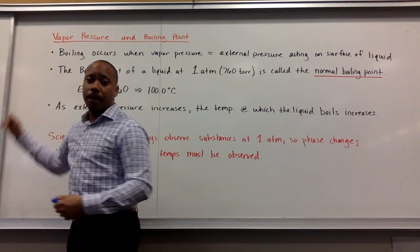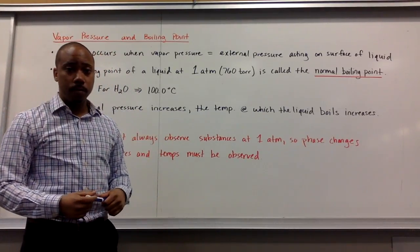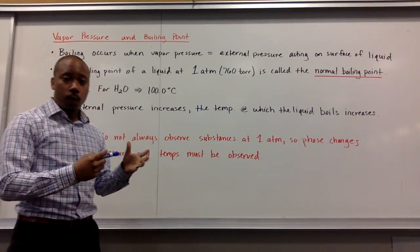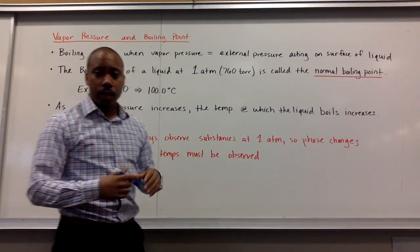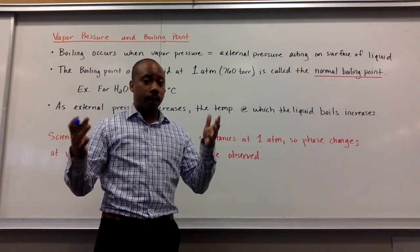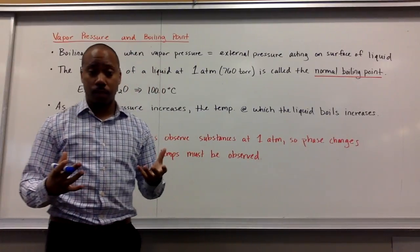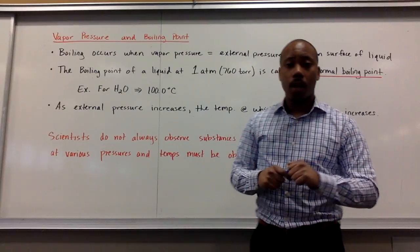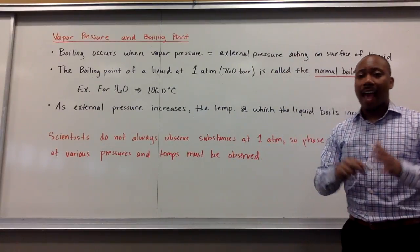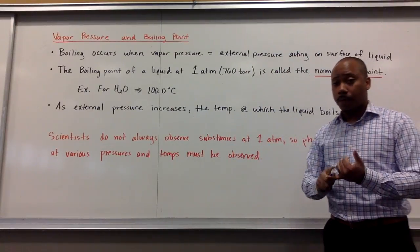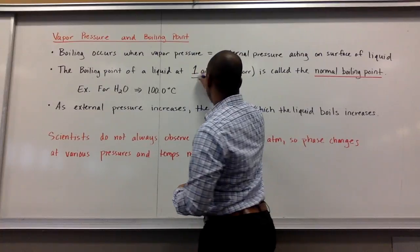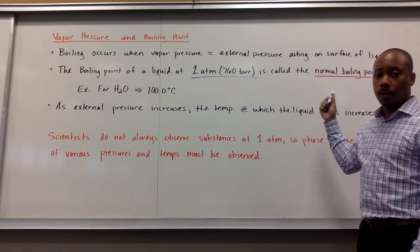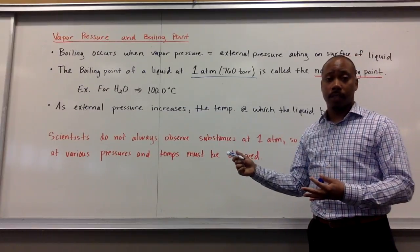Let's look at how vapor pressure and boiling point relate. Boiling occurs when the vapor pressure equals the external pressure acting on the surface of the liquid, which we call atmospheric pressure, as we just discussed. The boiling point of a liquid at one atmosphere specifically is called the normal boiling point. For water, that is 100 degrees Celsius.